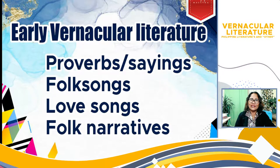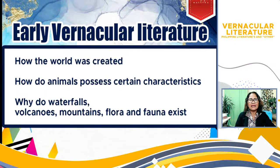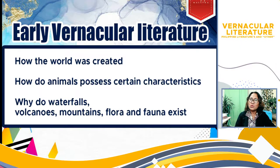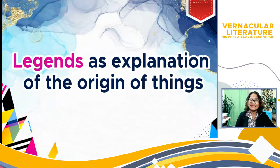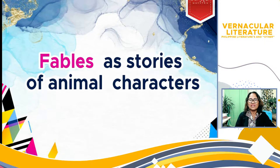Philippine literature is best appreciated in the context of the country's cultural traditions as expressed in various literary forms. The early vernacular literature written were proverbs, sayings, pop songs, love songs, pop narratives, and other early vernacular literature. These early vernacular works would also express and tell the younger generations how the world was created, how animals possess certain characteristics, and why waterfalls, volcanoes, mountains, the flora, and the fauna exist. We have also written legends as explanations of the origin of things.